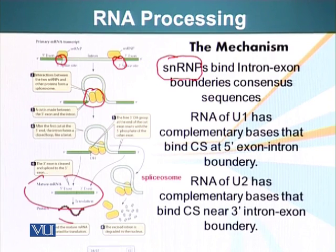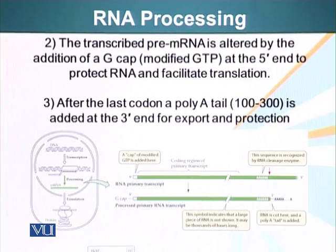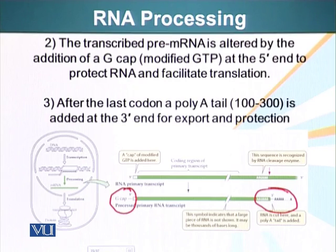The mechanism for binding of snRNPs at specific regions of introns is based on the RNA component within them. The binding of snRNPs at particular locations is based on the principles of complementarity of nucleotides — here we have RNA hybridizing with RNA present in the snRNP. So, as mentioned, the pre-messenger RNA goes through three steps: removal of introns, addition of a G-cap, and addition of a poly-A tail at the 3 prime end. Now this messenger RNA is ready for export and translation into a protein.